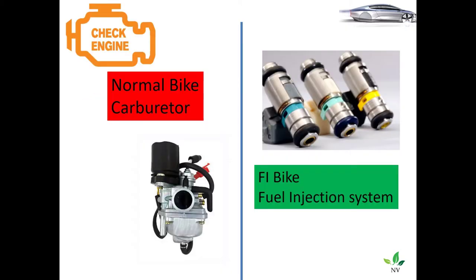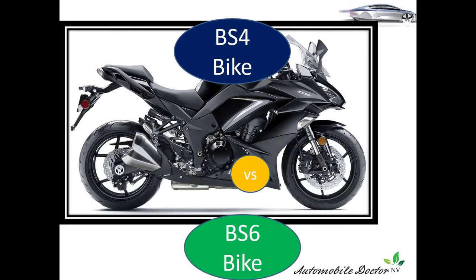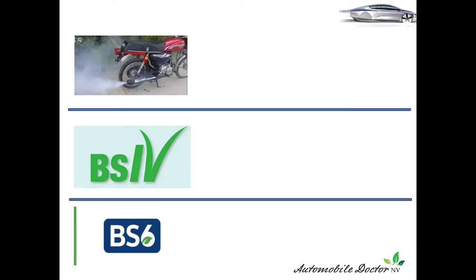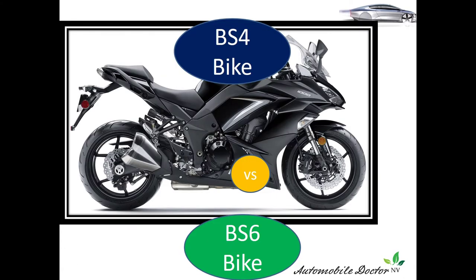FI bikes, or fuel injection system bikes, and software are all linked together, and it is similar to mobile software — this is where we are going to compare both. FI bikes or fuel injection bikes, why they are used, we will understand in more detail today. Then BS4 bikes, BS6 bikes, Euro 4 bikes, Euro 6 bikes, fuel injection — yes, these terms will be everywhere. I'm going to give a different dimension on why BS6, why BS4, why is an alien software coming inside my bike, why a mechanical system needs software.